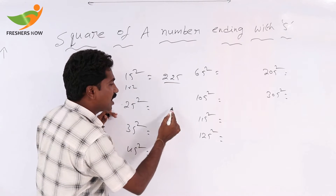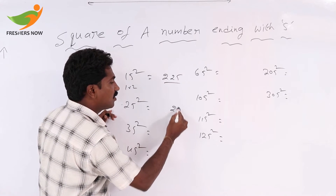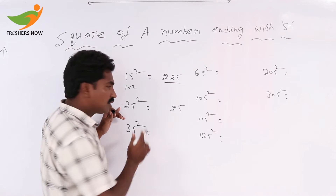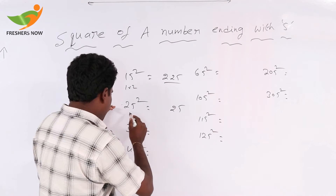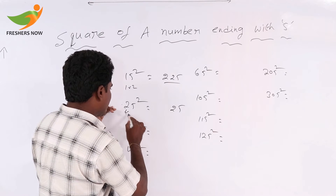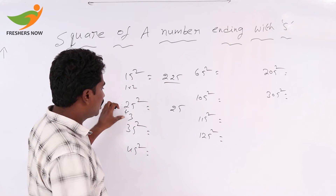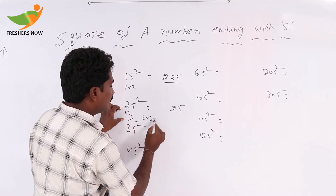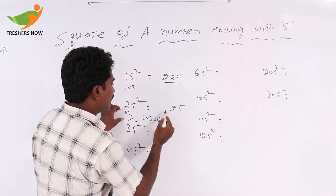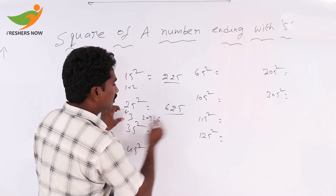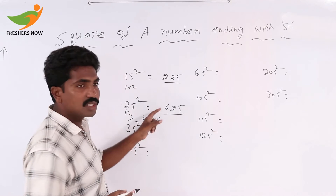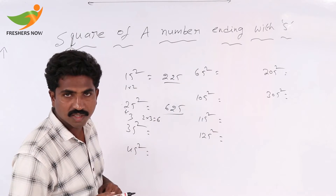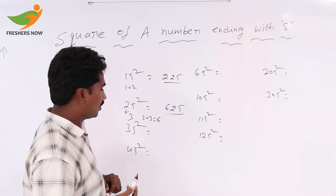For 25 square: 5 square equals 25. The tens digit is 2. The next number after 2 is 3, so 2 into 3 equals 6. So 25 squared equals 625.